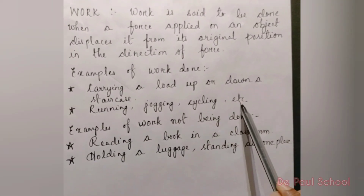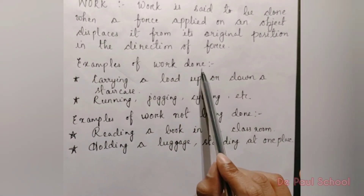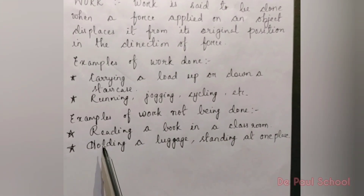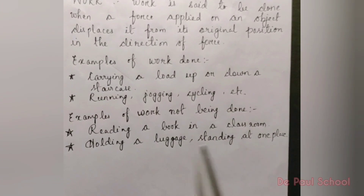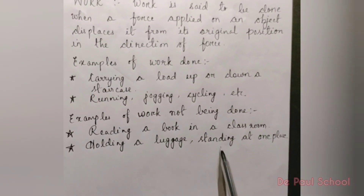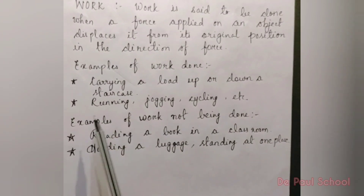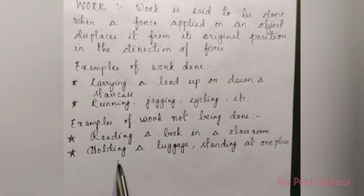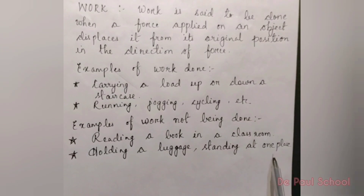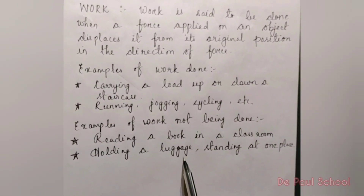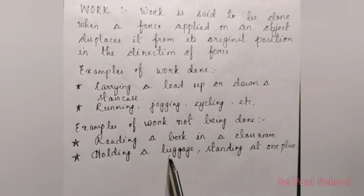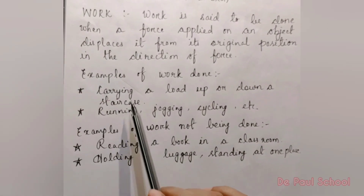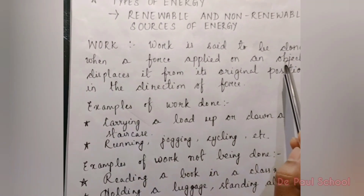Work is not being done in certain cases like reading a book in a classroom or holding luggage and standing at one place. In general terms, we might think that holding luggage means work is done — but that is wrong according to science. Work is said to be done only when an object is displaced from its original position.